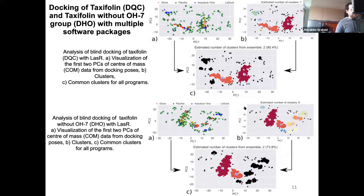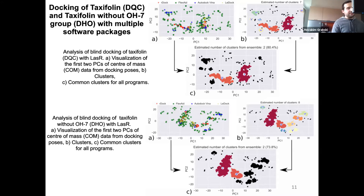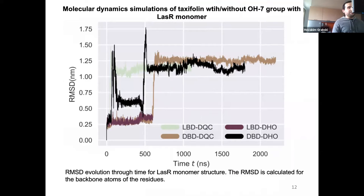As mentioned earlier, quercetin's OH7 group is responsible for the main inhibitory activity. That's why we decided to imitate the experiment and modify the OH7 group with a simple hydrogen atom. In both cases, we can see two clusters that correspond across all docking programs. After that, we performed molecular dynamics simulations. The structures are quite stable, and we simulated for over two microseconds in some cases, giving us sufficient data.